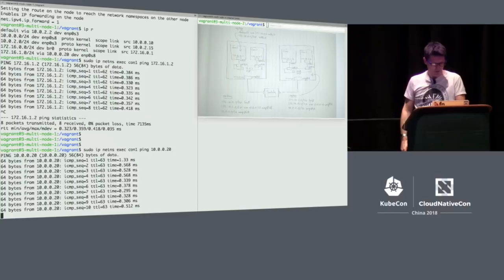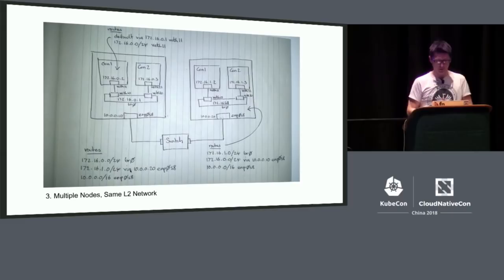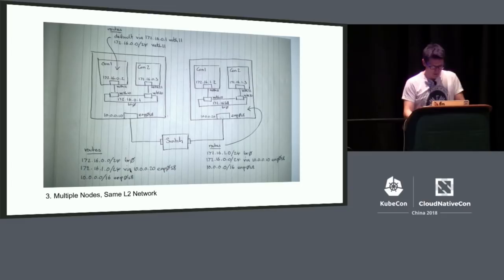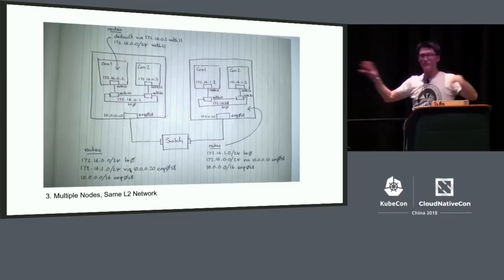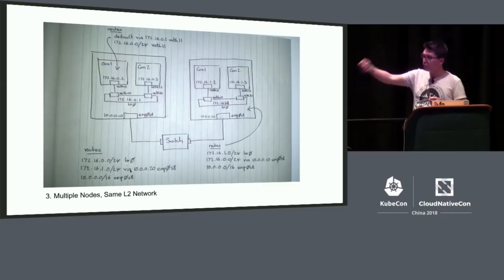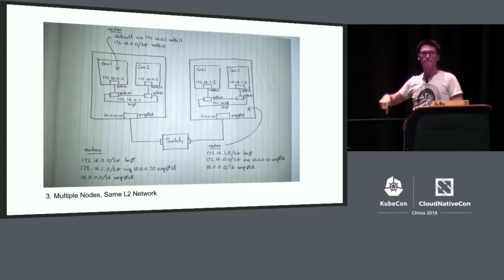Now we get to step four, which is the more complicated one I've been building up to, because it represents what I didn't understand in the first place about Flannel and overlay networks. Before we move on — if these two nodes were on separate L2 networks and that switch in the middle was the internet or other routers, then this trick wouldn't work, because the next hop wouldn't be on the same network. One thing you could do is add those routing rules to all the routers in between, but I suspect that's not what most people can do.